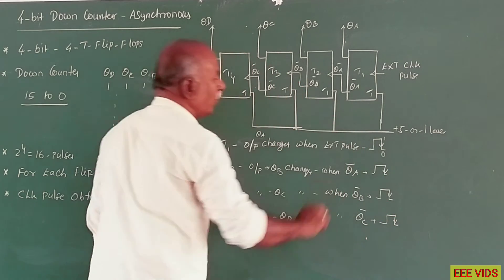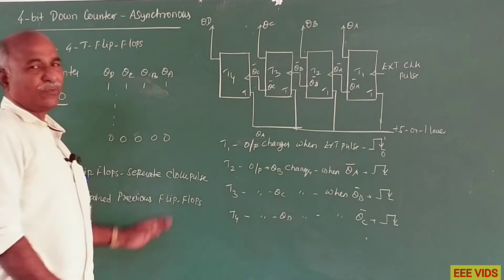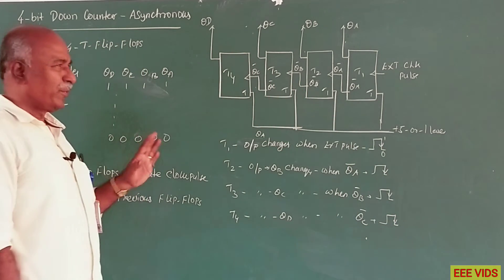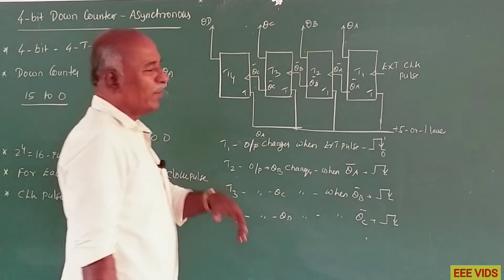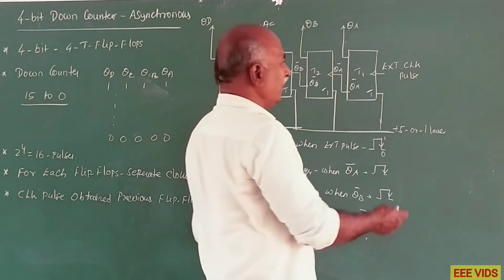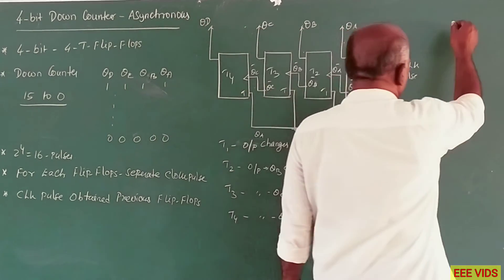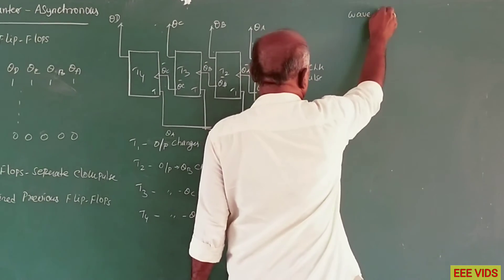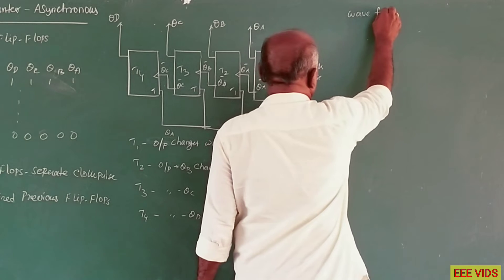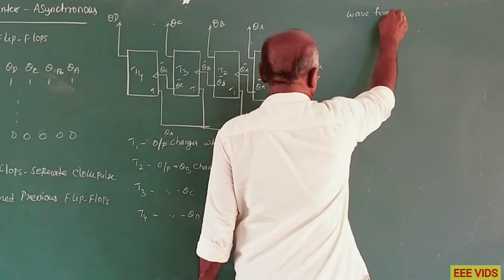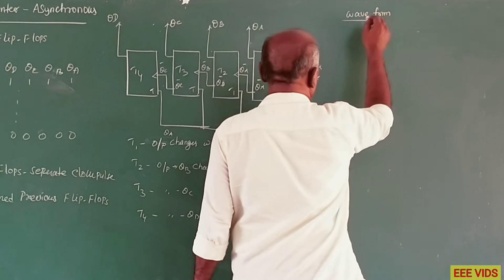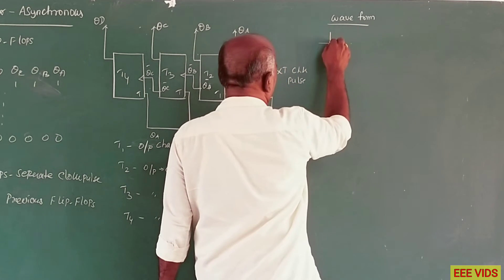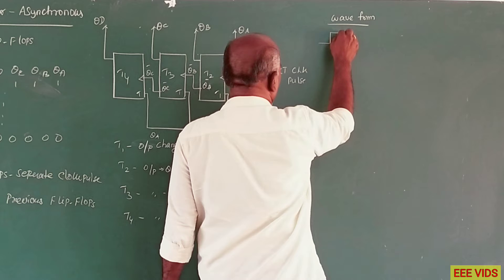Based on this configuration, we can draw a waveform. A simple waveform is drawn showing the external clock pulse applied, and the first transition occurs at 1 to 0.